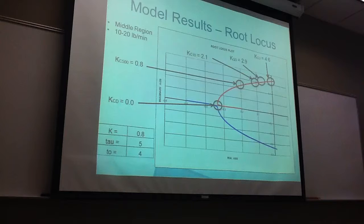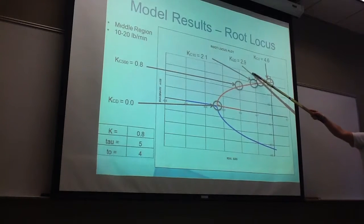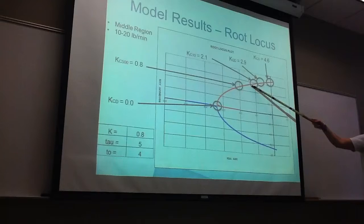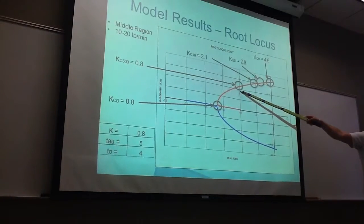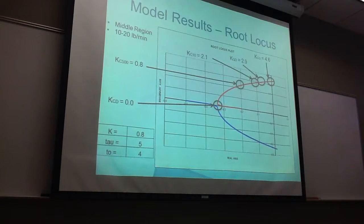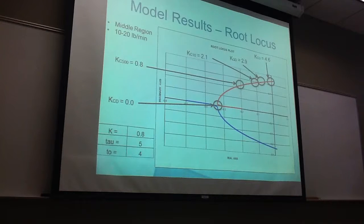In our middle region, from 10 to 20 pounds per minute, we found the critical damping to be 0. We found our ultimate to be 4.6, and our quarter decay to be 2.9, our 1/10 decay to be 2.1, and our 1/500th decay to be 0.8. And this was using a gain of 0.8, a tau of 5 seconds, and a dead time of 4 seconds.